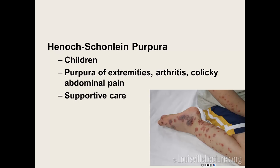Henoch-Schönlein purpura is a variation of IgA nephropathy, usually seen in kids. They present with abdominal symptoms, colicky pain, and a purpuric rash on their legs, trunk, and buttocks. Treatment is supportive care. In adults it can occur and doesn't resolve as quickly, so steroids are sometimes used.